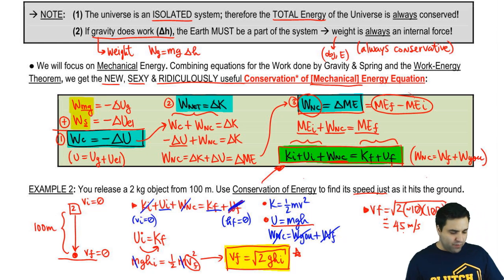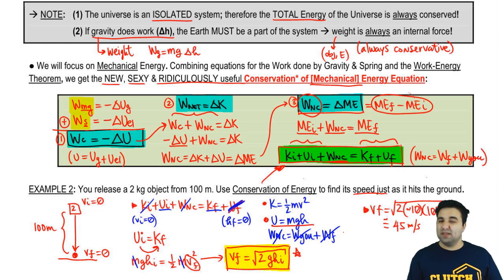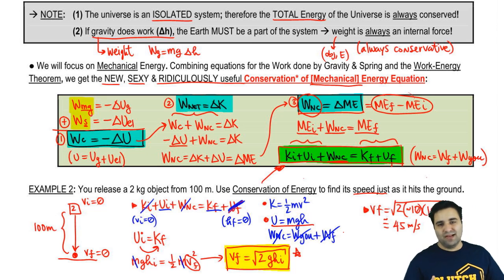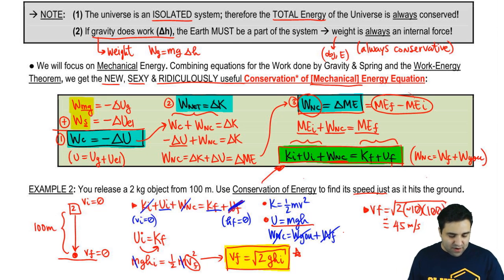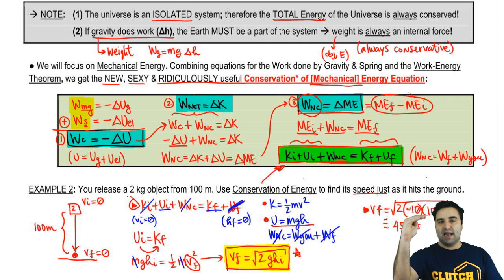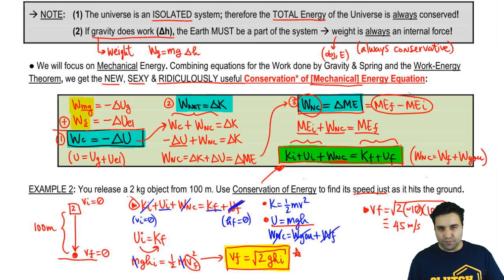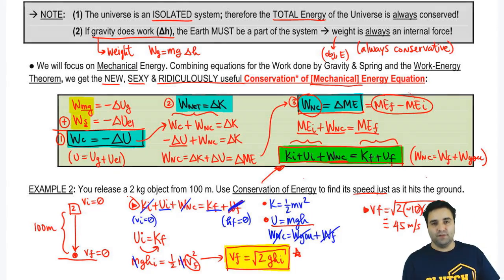One benefit of using the energy equation is that everything is almost always positive — you don't have to worry about signs. Gravity gets plugged in as positive 9.8 or 10. Another benefit is that you don't have to pick equations; it always starts from the same equation and you just cancel out the energies you don't have until you reach the variable you're looking for.